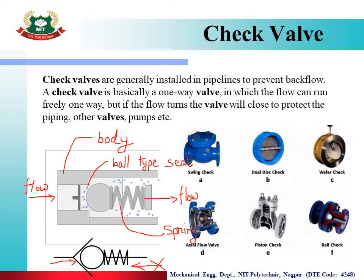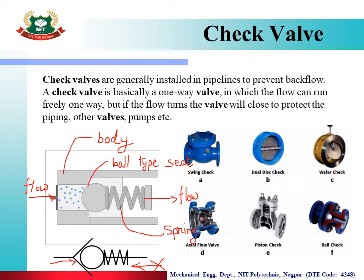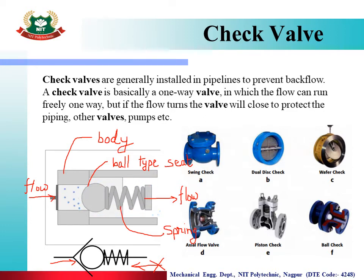There are different types of check valves: swing type check valve, piston type check valve, and ball type check valve. The ball type is the same as what is used in your home tap connection, where flow is allowed in one direction and flow return is blocked — it does not go back.